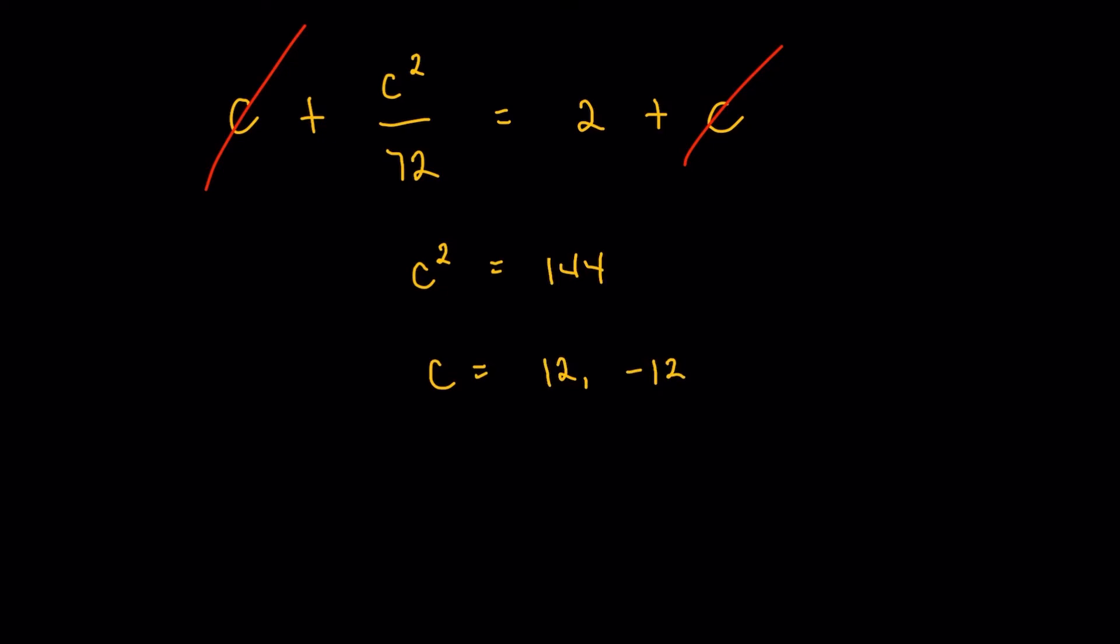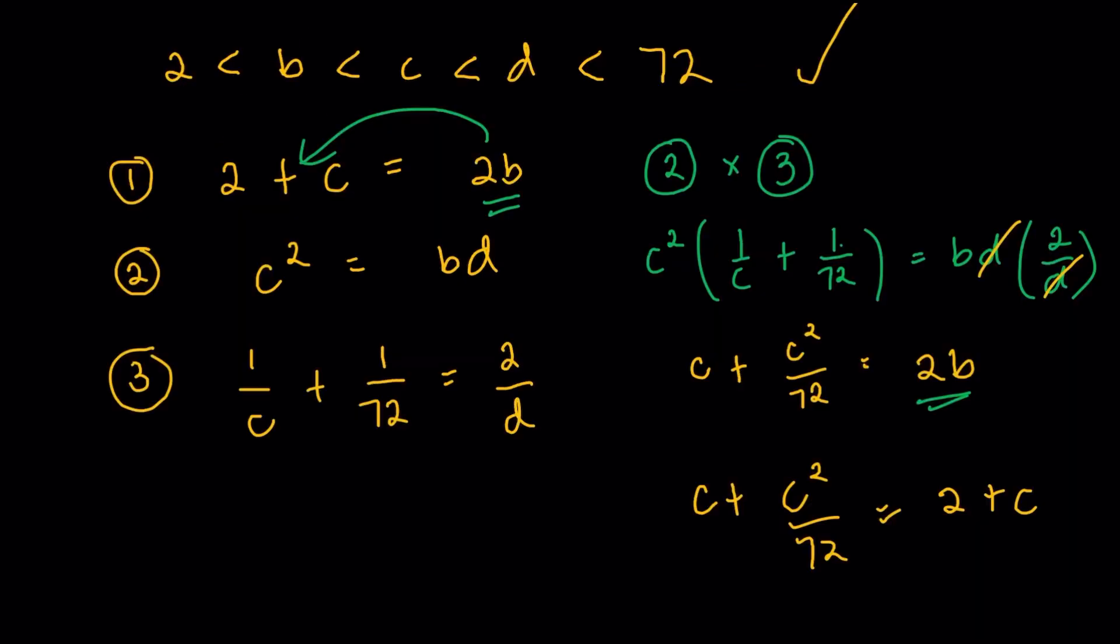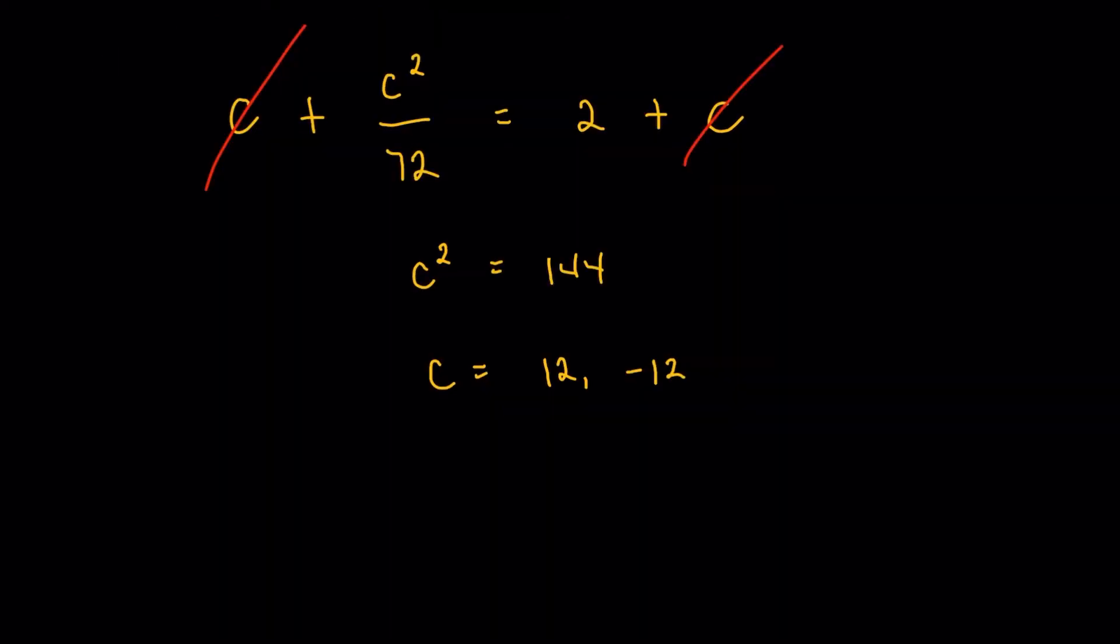Again, take care of the positive and negative signs. But we could eliminate one of those, because going back to the given, we do have this inequality from the fact that the terms are in increasing order. So C must be greater than 2. So I don't think C could be negative 12 then. So we're going to consider C to be 12.